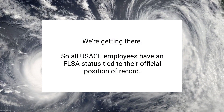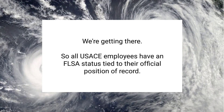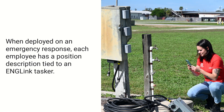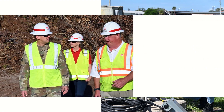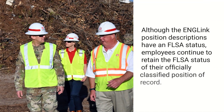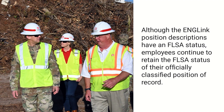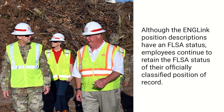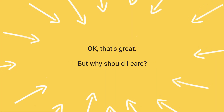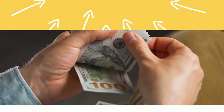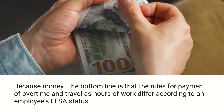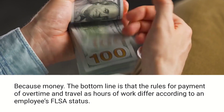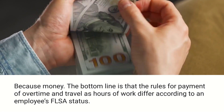So all USACE employees have an FLSA status tied to their official position of record. When deployed on an emergency response, each employee has a position description tied to an EngLink Tasker. Although the EngLink position descriptions have an FLSA status, employees continue to retain the FLSA status of their officially classified position of record. But again, why should I care? Because money. The bottom line is that the rules for payment of overtime and travel as hours of work differ according to an employee's FLSA status.